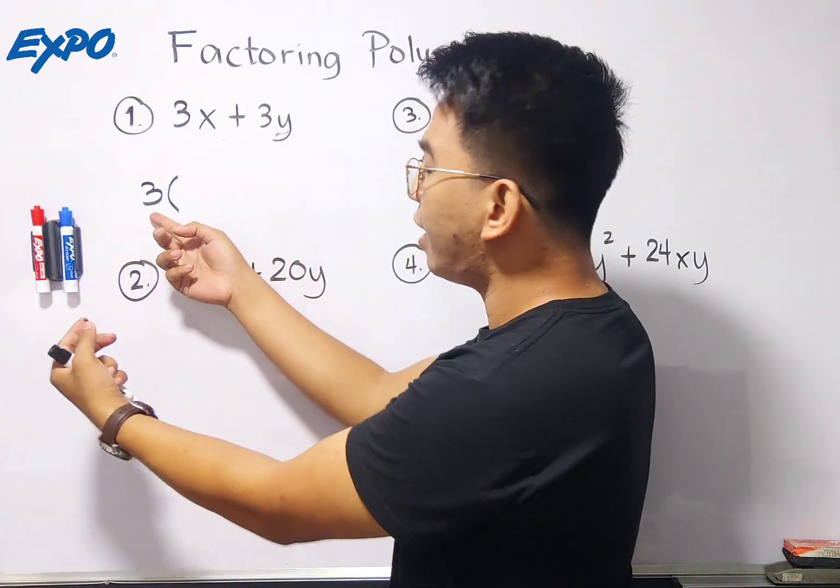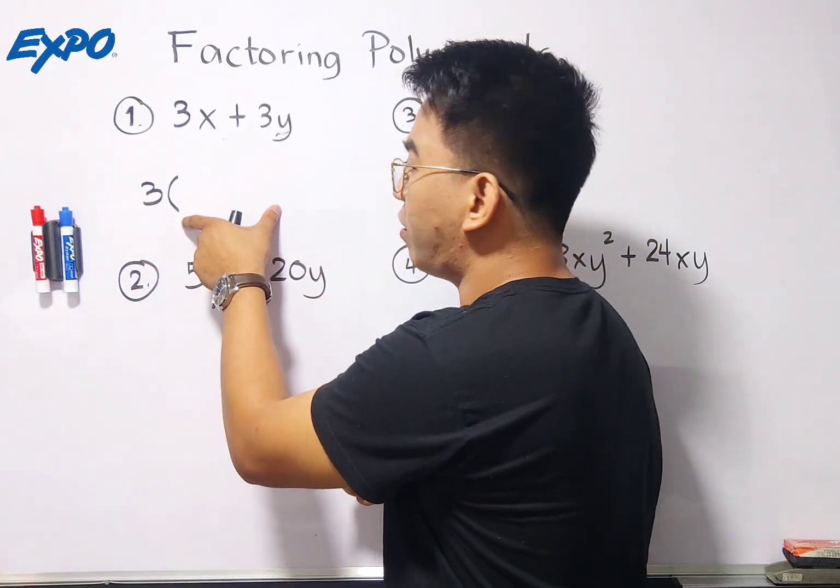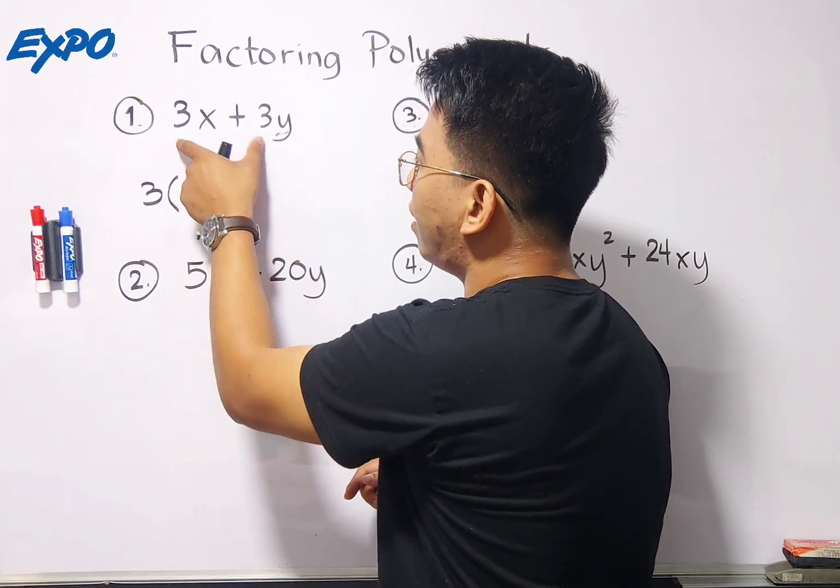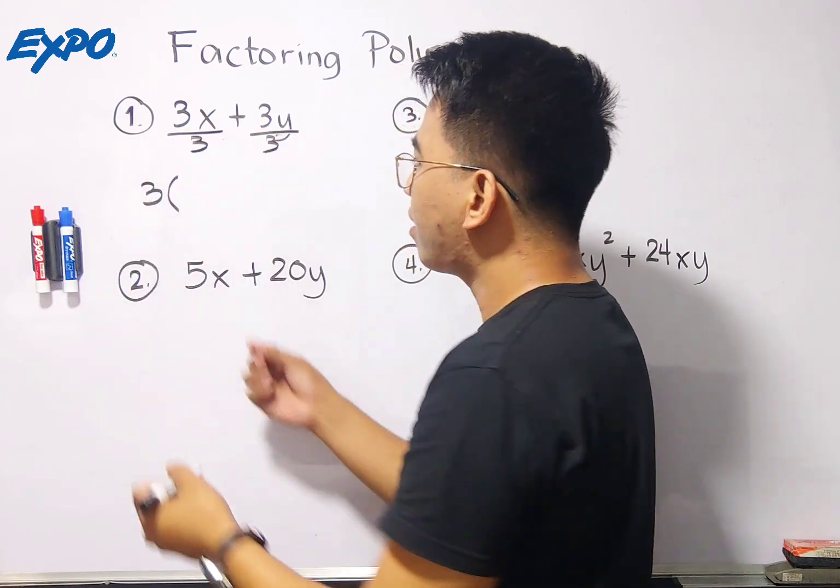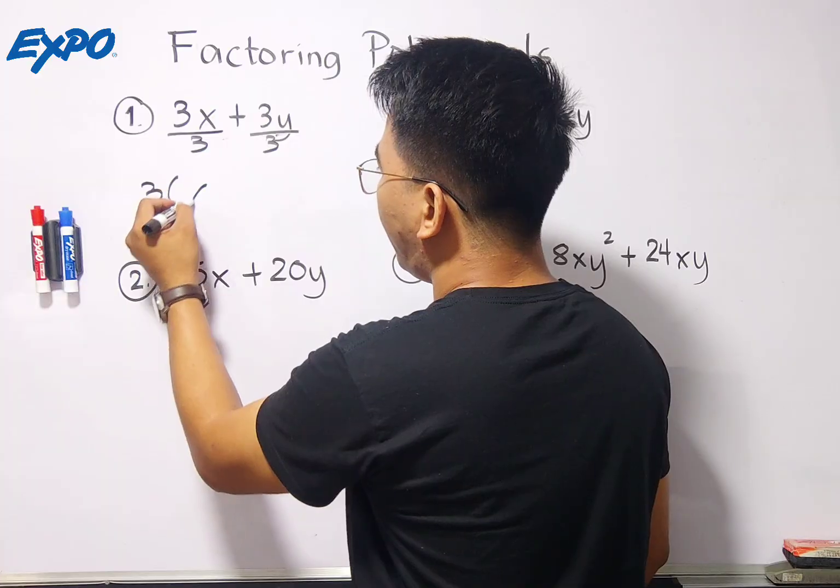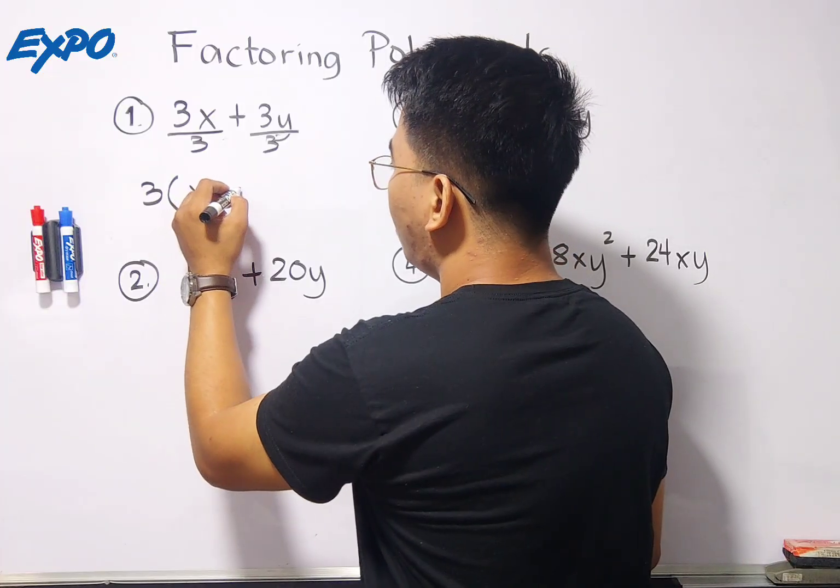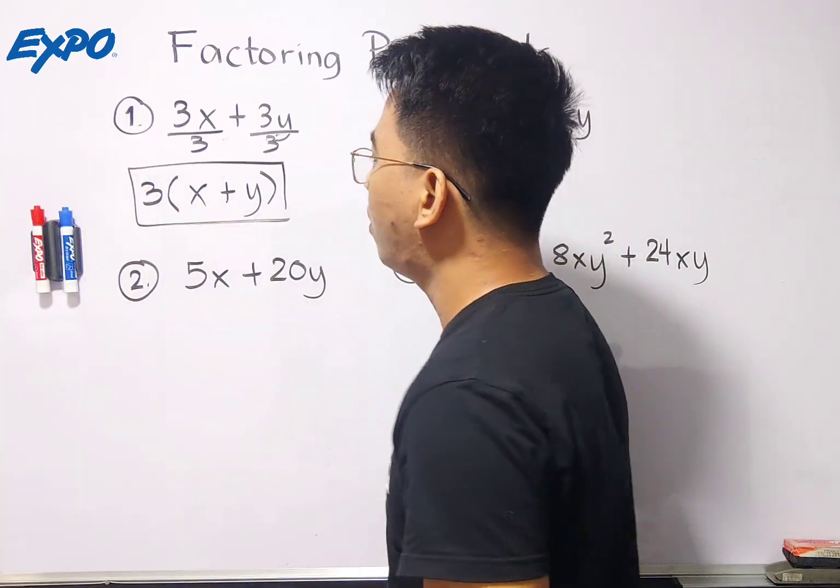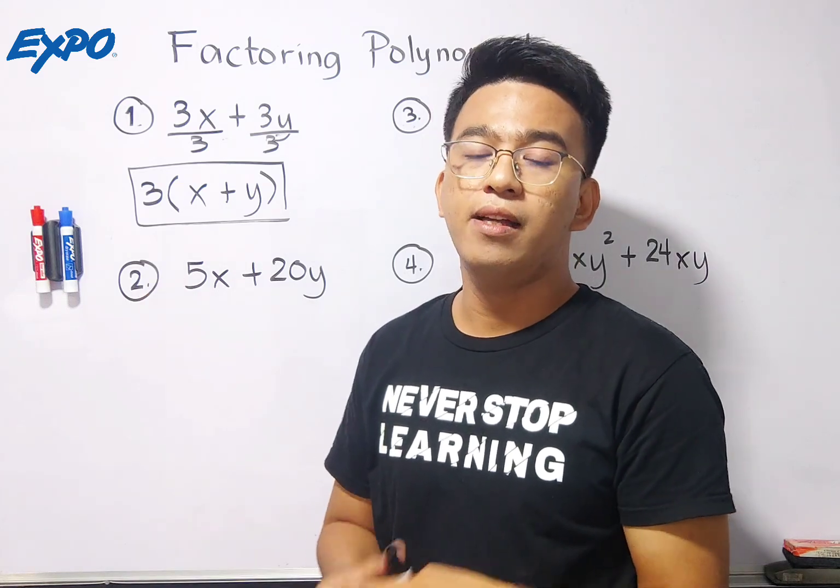So what we need to do now is to put here the variable 3 and we will try to think how to divide this polynomial to get the other factor. Remember guys, the 3 is the greatest common factor. Again, the 3 is the greatest common factor while we need to find the other factor here. To find the other factor, we need to divide the two terms here. So we will divide this by 3 and divide this by 3. So 3x divided by 3 is simply x. Then 3y divided by 3 is simply plus y.